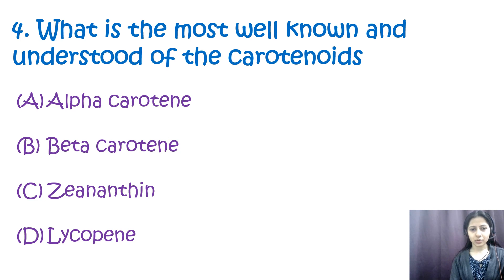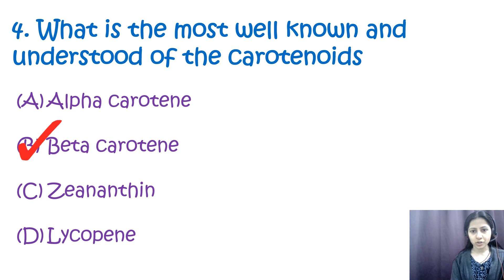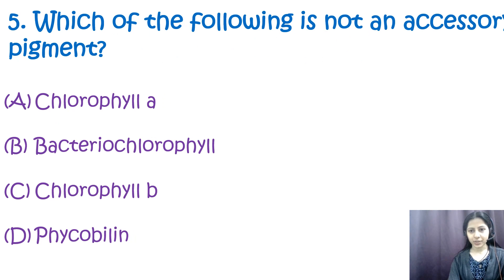Question number four: what is the most well-known and understood of the carotenoids? Options are: a) alpha carotene, b) beta carotene, c) zeaxanthin, d) lycopene. The correct option is b, beta carotene. Beta carotene is a natural pigment that imparts yellow to orange color to plants. Zeaxanthin is a xanthophyll carotenoid containing oxygen, found mainly in yellow to green foods. Lycopene is a carotene responsible for the red color in tomatoes, watermelons, and other fruits.